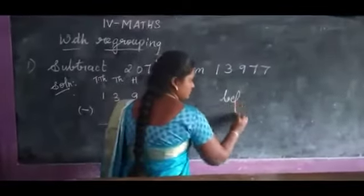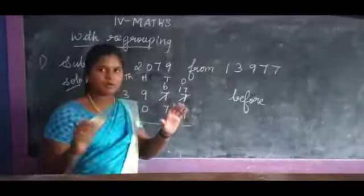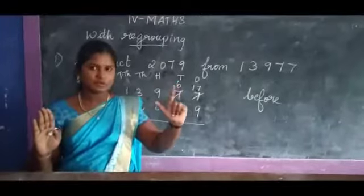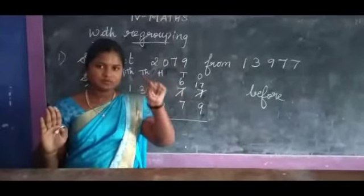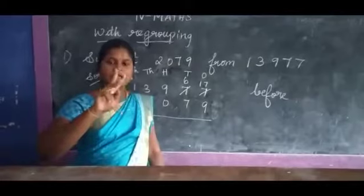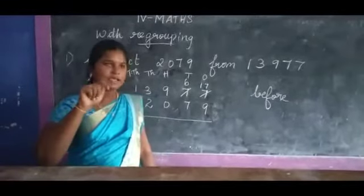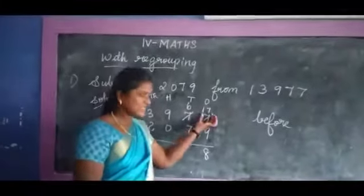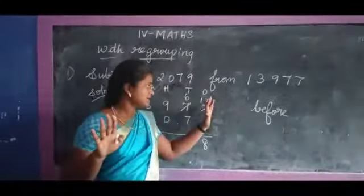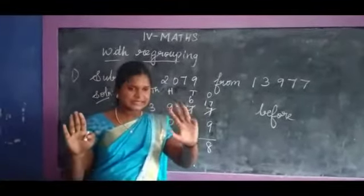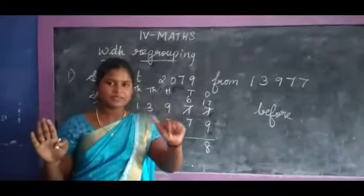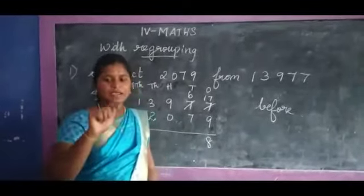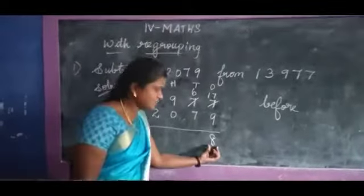17 in the mind, take 9 fingers: 17 before — 16, 15, 14, 13, 12, 11, 10, 9, 8. So the answer is 8.